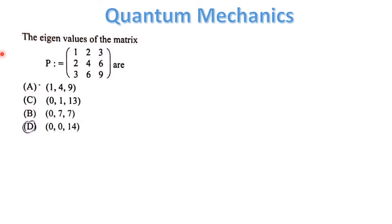Our first question is: the eigenvalues of the matrix P = [[1,2,3],[2,4,6],[3,6,9]] are?